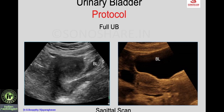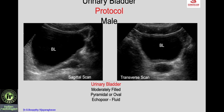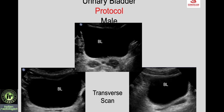An empty bladder cannot be studied; the bladder must be full to study the bladder as well as structures posterior to it. In the male, you see the sagittal and transverse scan — the bladder appears as a fluid-filled pyramidal or oval structure. The prostate is also pyramidal in shape with medium-level uniform echoes.